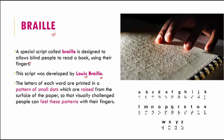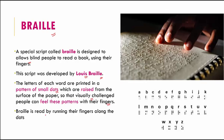In Braille, the letters of each word are printed in patterns of small raised dots on the surface of the paper — like an embossed paper — so a visually challenged person can feel the patterns and read with their fingers. For example, the letter 'A' has one raised dot in a specific pattern. Braille is read by running fingers along the dots. These are the different alphabets in Braille.